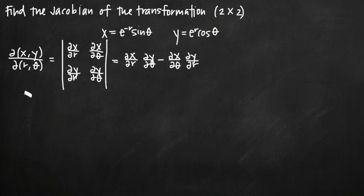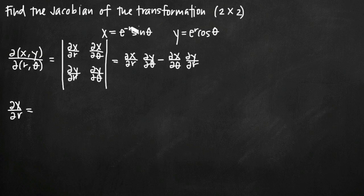First we'll find the partial derivative of x with respect to r, treating r as the variable and theta as a constant. Since theta is constant, sine of theta is also a constant — essentially a coefficient on e to the negative r. This is no different than taking the derivative of three e to the negative r where three is just a constant. The derivative of e to the negative r is negative e to the negative r, and sine theta remains as a constant coefficient.